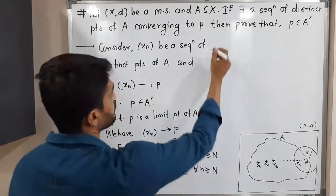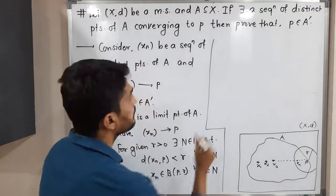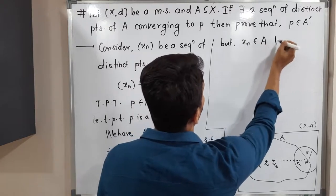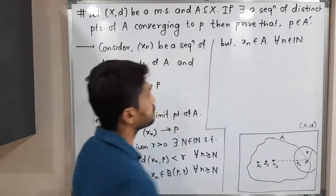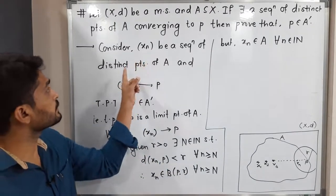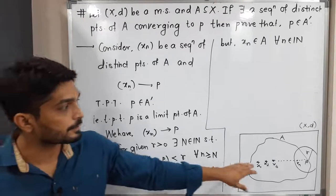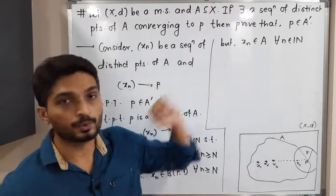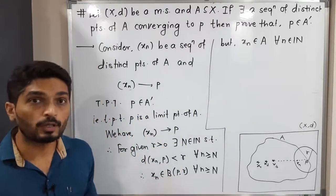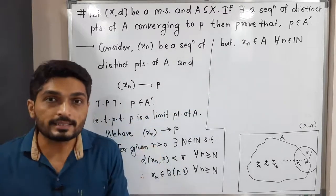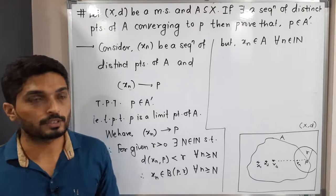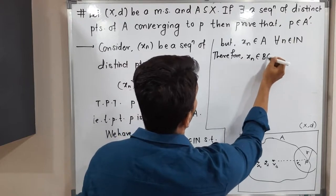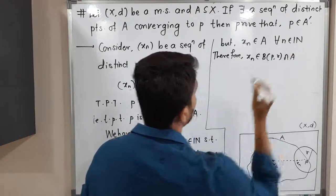But Xn belongs to A for all n belonging to the set of natural numbers, since I already mentioned Xn is a sequence of points of A — that means all terms of the sequence Xn are elements of A. So therefore, Xn belongs to A. So Xn belongs to both the ball and A. Therefore, Xn belongs to the intersection of these two sets — that is, the open ball with center P radius R intersected with A.